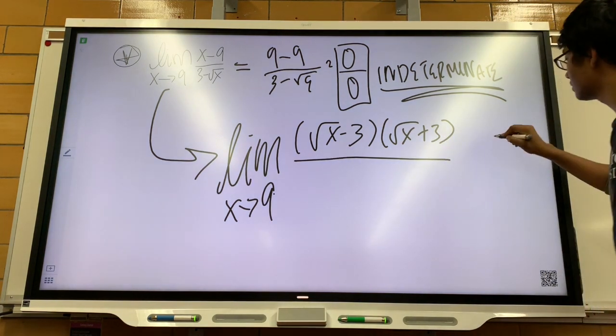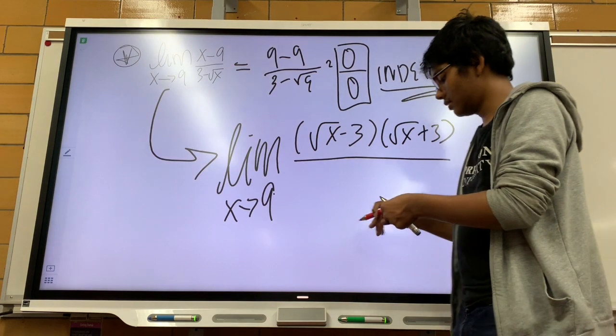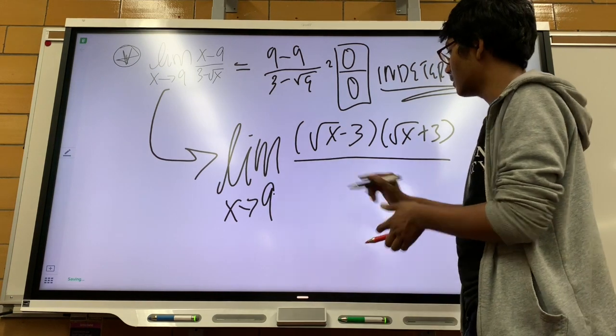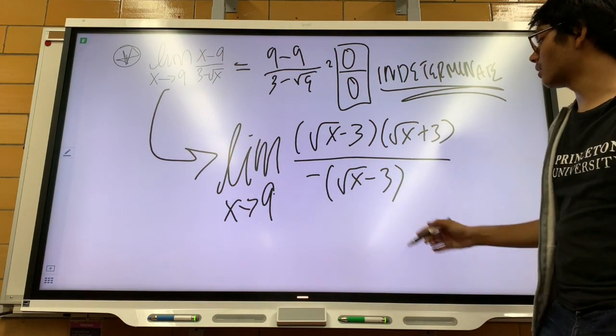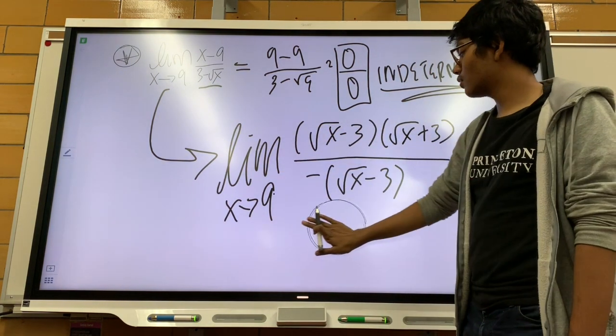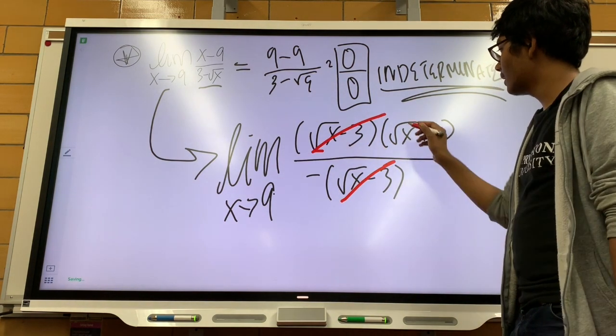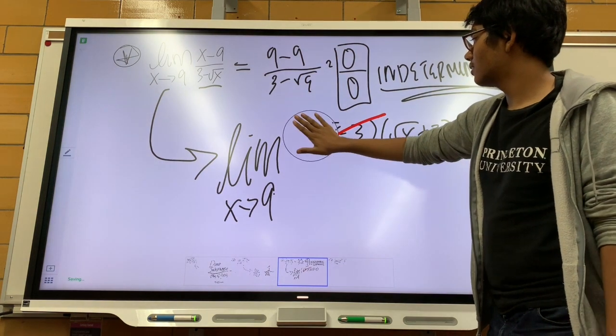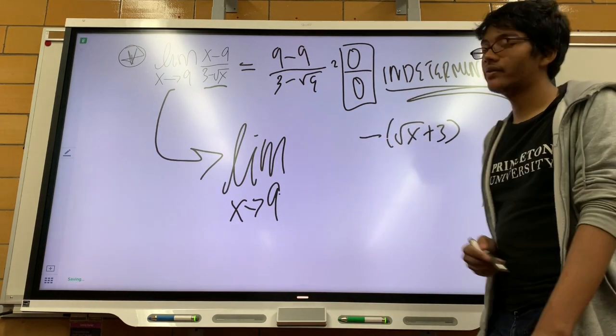Let's write over here negative square root of x minus 3. Because that's what we had before the denominator. Negative square root of x minus 3 is just 3 minus square root of x. That's it. So now we can go ahead and subtract all the things we want. These two cancel out. Because you have a negative in the denominator, this top part is just going to become negative. It's going to become negative square root of x plus 3.